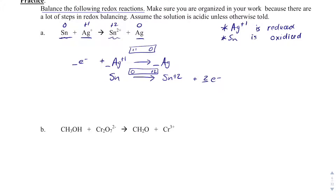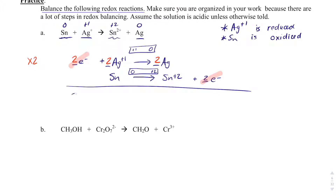To add up the reactions, electrons must cancel, so I multiply the silver reaction by 2 — this becomes 2Ag⁺, 2 electrons, and 2Ag. The electrons cancel, and the overall reaction is: 2Ag⁺ + Sn → 2Ag + Sn²⁺.